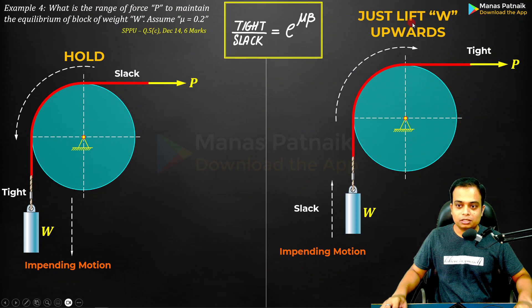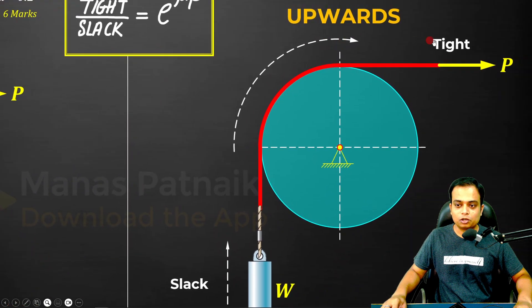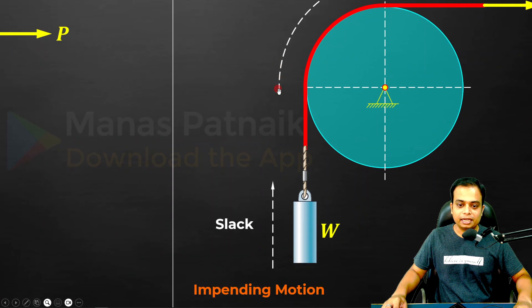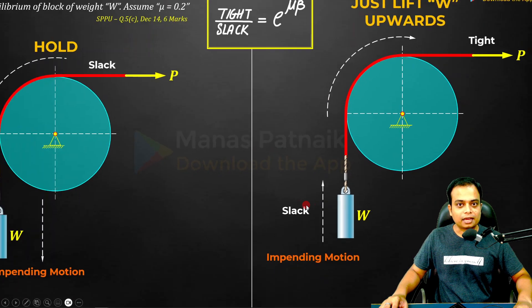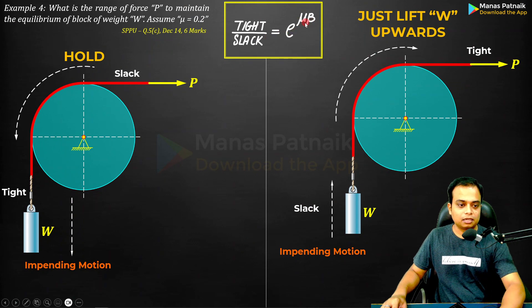In this case, if you want to just lift the weight W upwards, this is the impending motion. As far as this cord is concerned, this is clockwise. Arrowhead corresponds to the tight side whereas the tail corresponds to the slack side. Again, tight by slack E raised to the power mu beta, let us apply the formula.